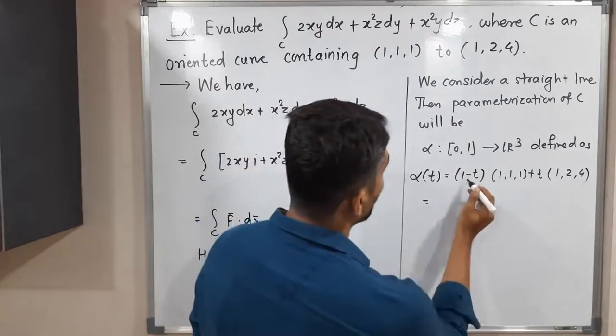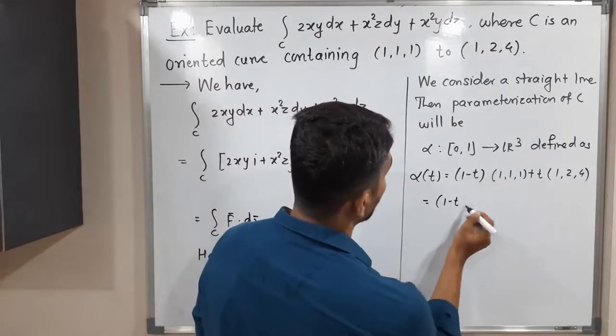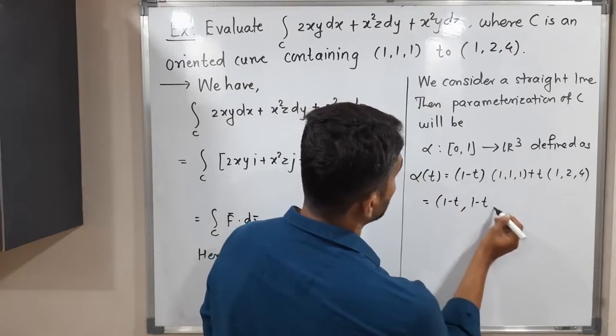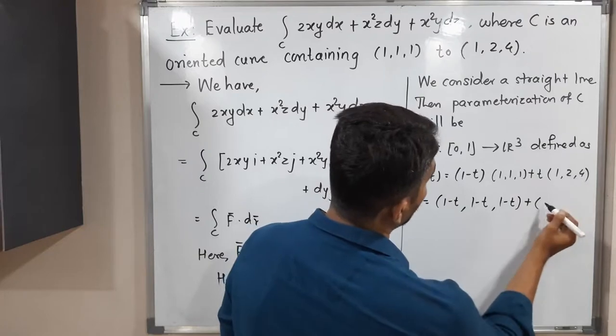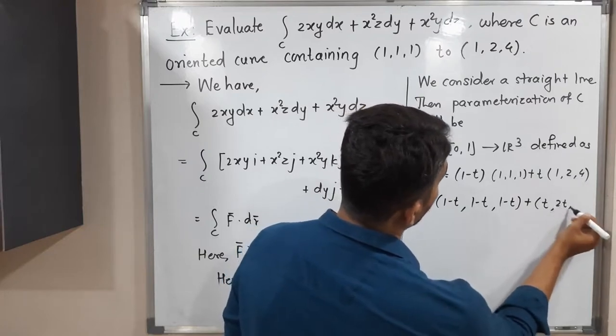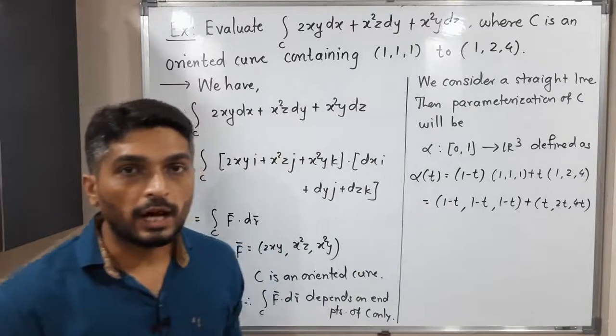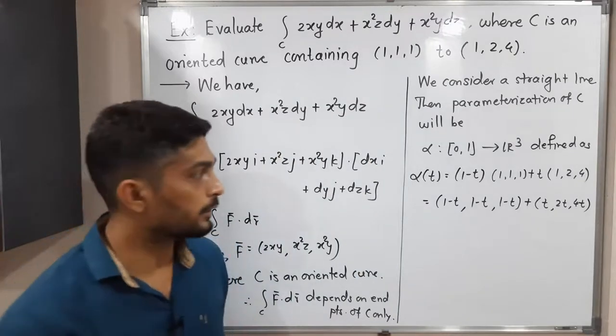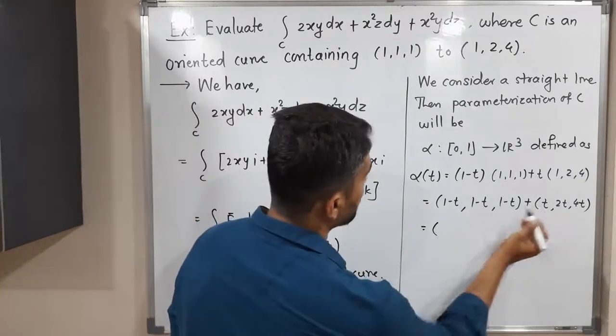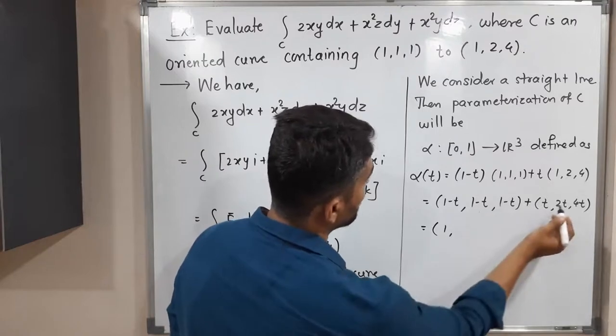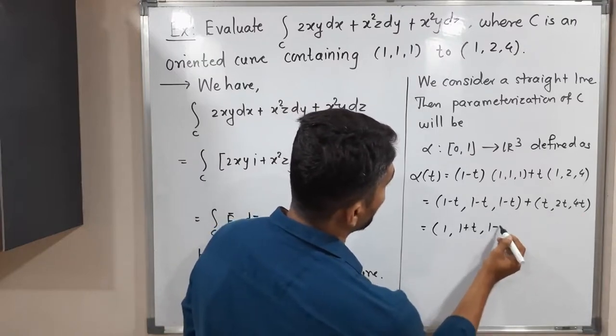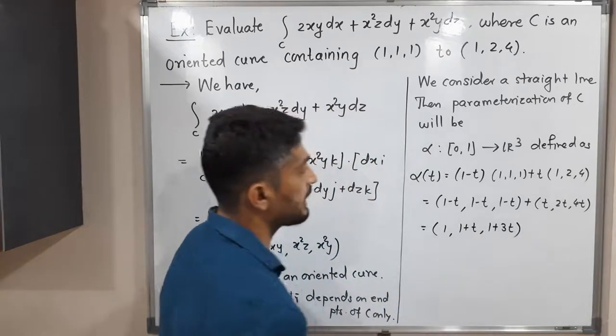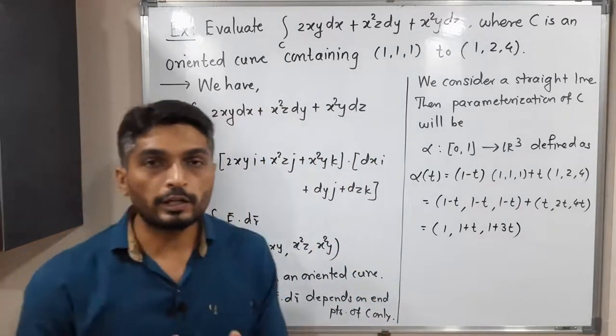So this is equal to (1-t) times (1,1,1) plus t times (1,2,4). Let us multiply t: t, 2t and 4t. You know well how to add—we will add component wise: 1-t plus t, we will have 1; 1-t plus 2t is 1+t; 1-t plus 4t is 1+3t. So this thing we will have. So we have got alpha of t.